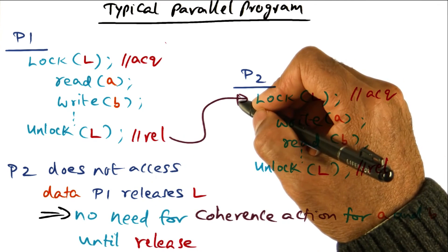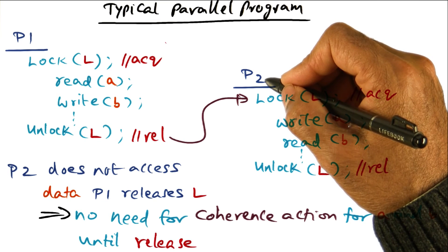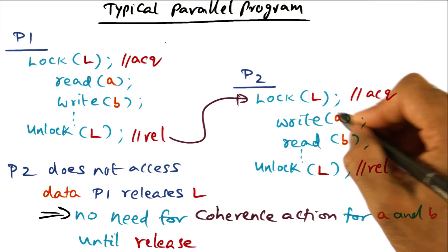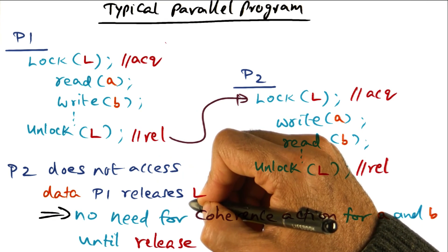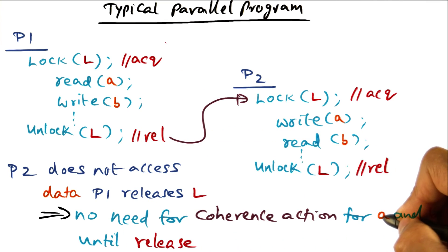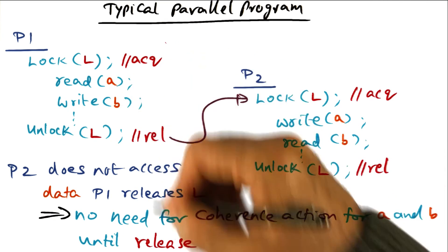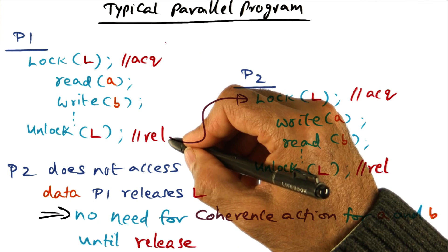So in this particular example, since P2 is not going to access any of these data structures until P1 has released the lock, there is no need for coherence action for A and B, until the lock is actually released.